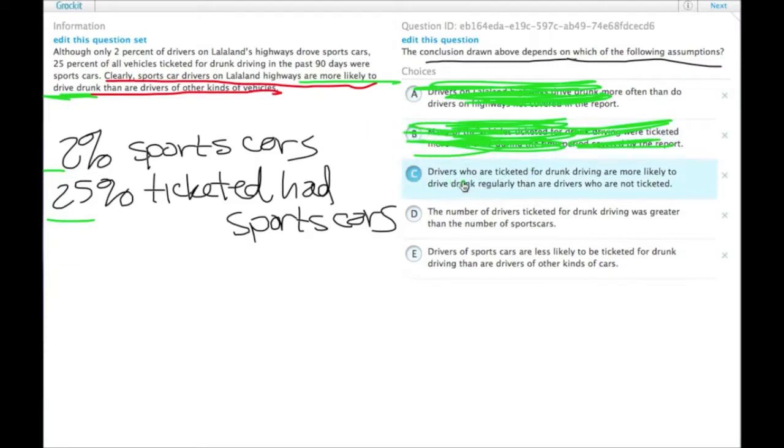C, drivers who are ticketed for drunk driving are more likely to drive drunk regularly than are drivers who are not ticketed. So this is the one that draws the connection between being ticketed and being likely to drive drunk. That is the underlying assumption in the argument. Choice C.